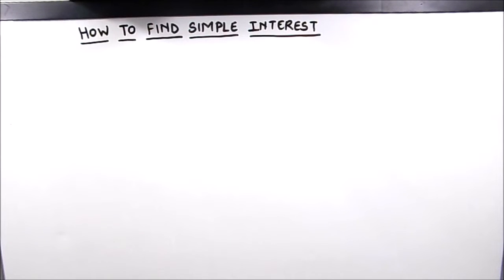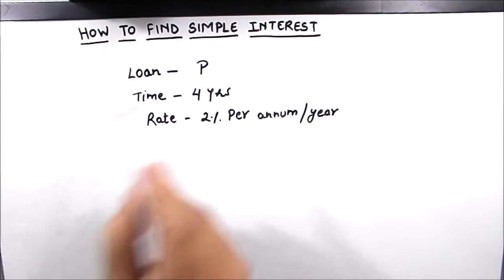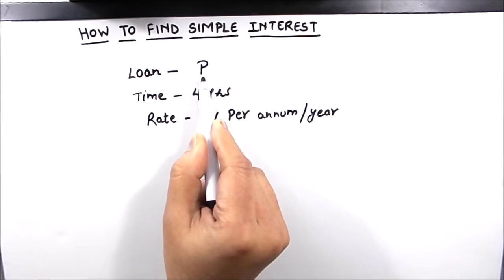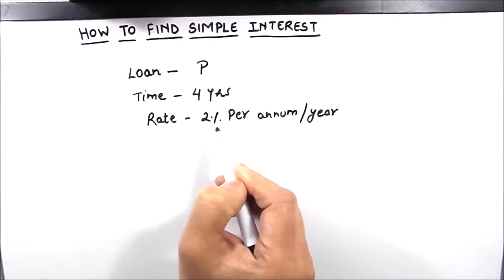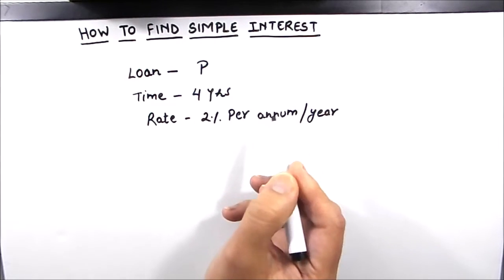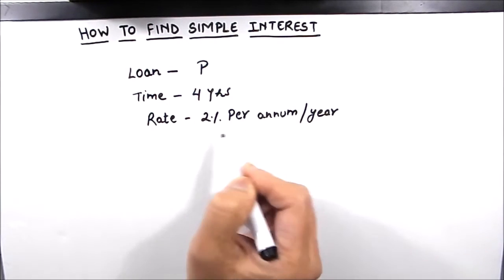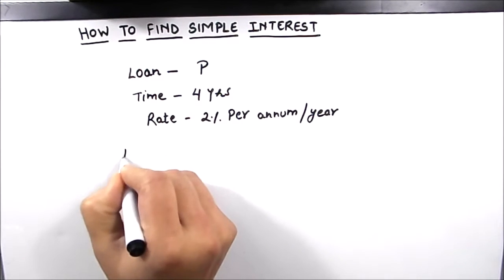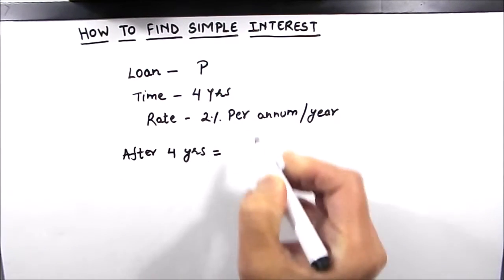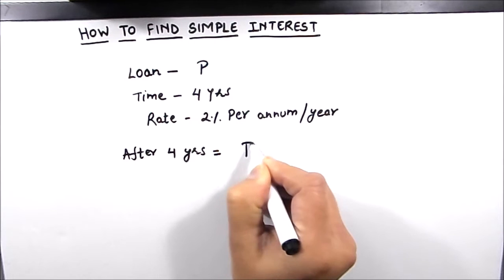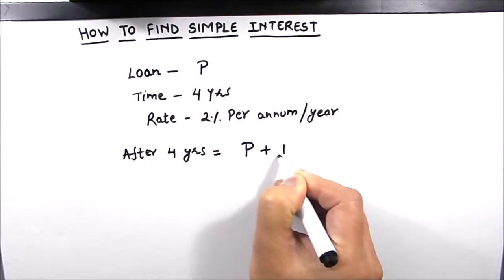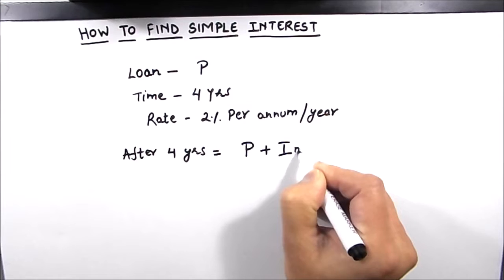Hello everyone, in this video we will be learning how to find simple interest using a few examples. So before starting, let us understand what is simple interest. For this, let us consider an example where you have borrowed a loan of rupees P for four years at a rate of two percent from a bank. Two percent per annum means two percent per year. So after four years you will be paying to the bank your principal amount plus some extra amount which is called interest.